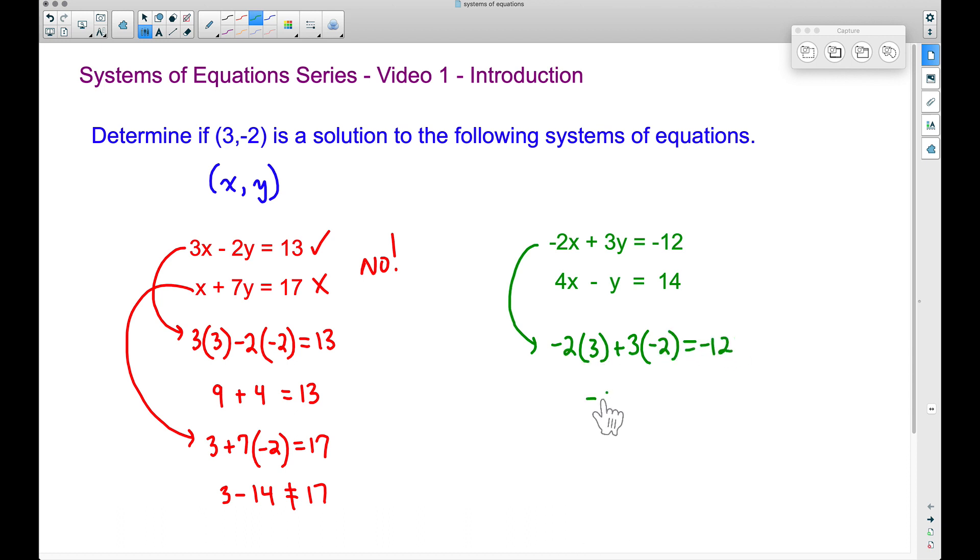Negative two times three, that's negative six. Three times a negative two, that's another negative six. And negative six minus six right here, that does give us negative 12.